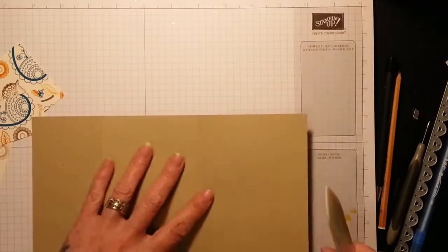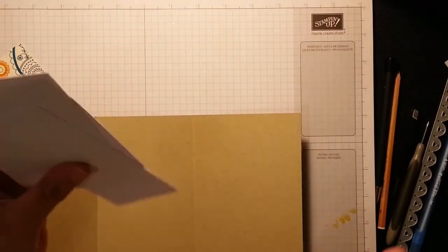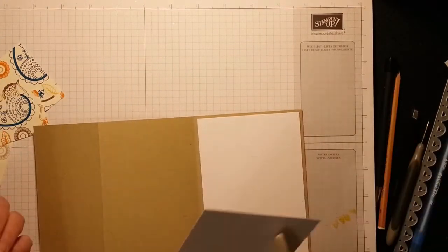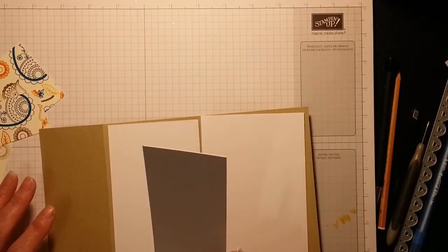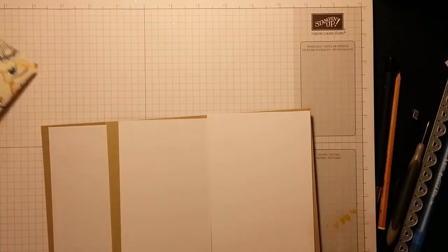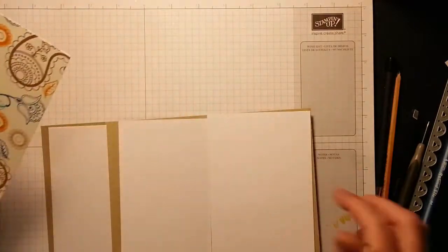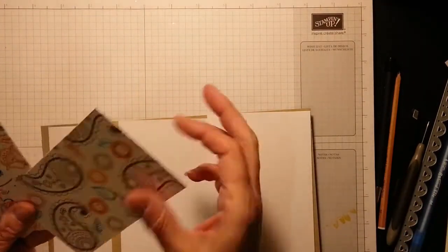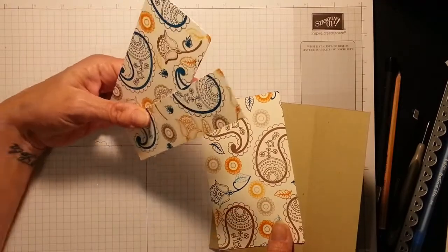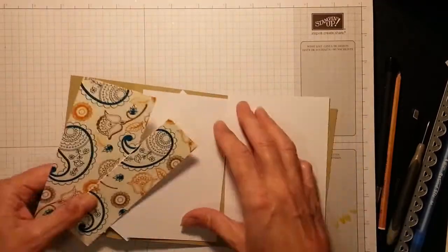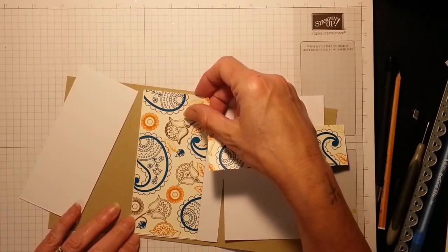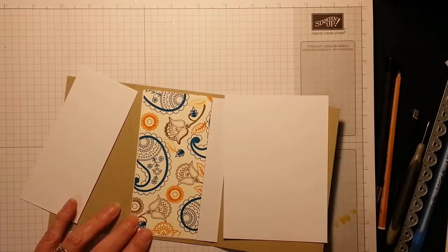You're also going to need some whisper white. They're all cut at five and a quarter. One is three and three quarters, one is three and a quarter, and the other one is two and a quarter. I'm using three pieces of DSP I made earlier. This one is three and a quarter, this one is three and a quarter by five and a quarter, this one here is two and a half by five and a quarter, and this one is one and a half by five and a quarter.